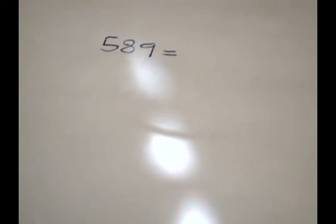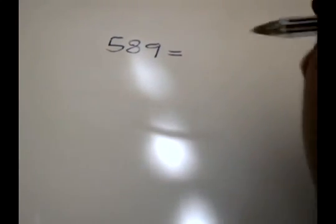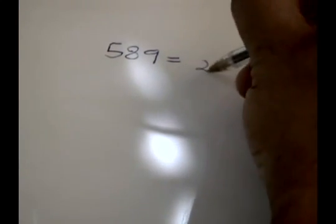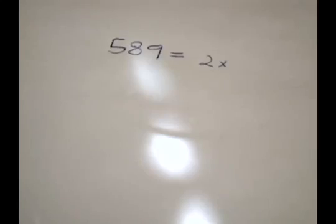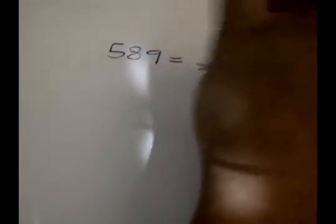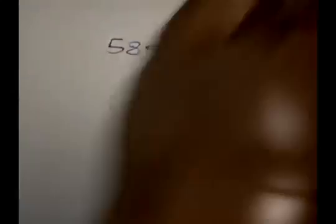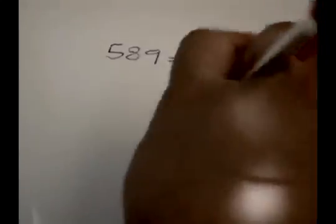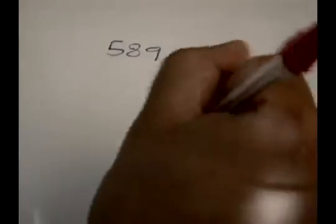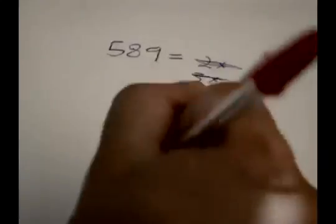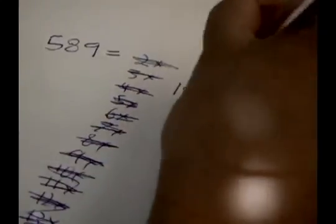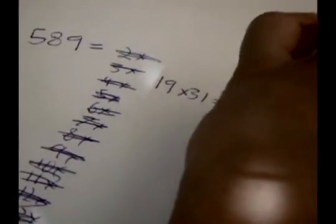Now compare this to prime factorization. If someone told you to find the prime factorization of 589, you will notice the problem feels harder. No matter what your strategy, it will require some trial and error until you find a number which evenly divides 589. After some struggle, you will find 19 times 31 is the prime factorization.